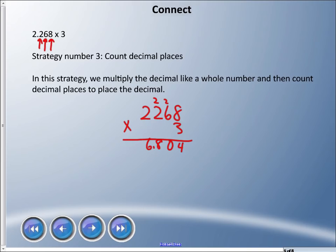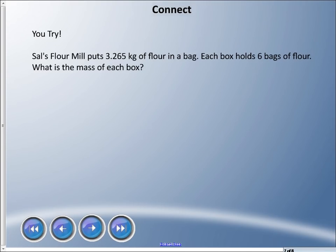Now let's try you try it. Sal's flour mill puts 3.265 kilograms of flour in a bag, and each box holds six bags of flour. What is the mass of each box? Using one of the strategies, and I don't recommend the base 10 blocks, but if you want to do it, can you find the answer? What is the mass of each box? Take whatever time you need to figure out this answer.